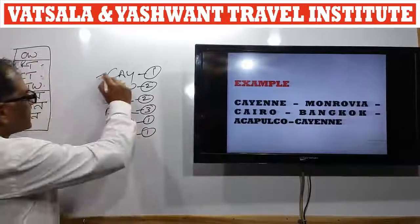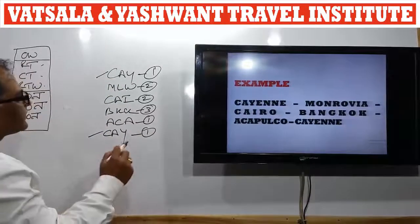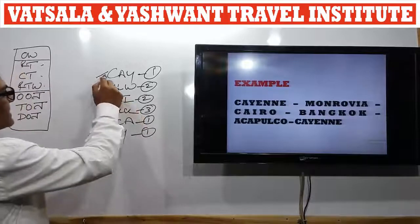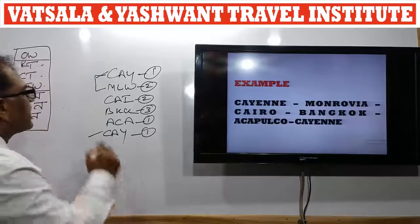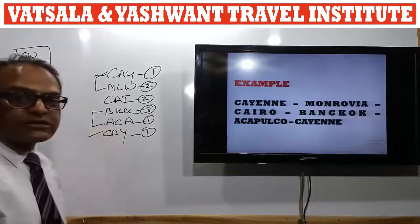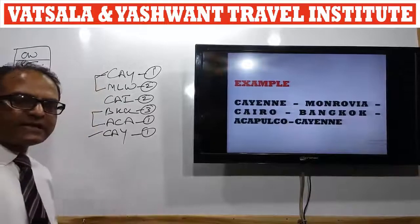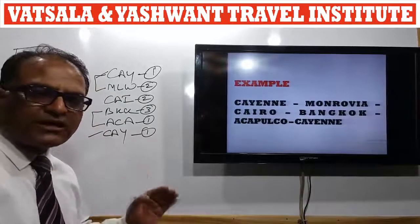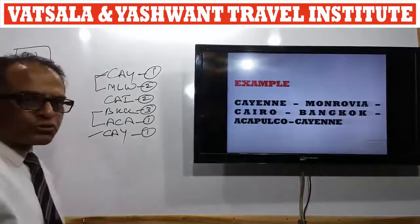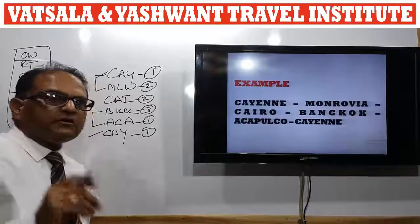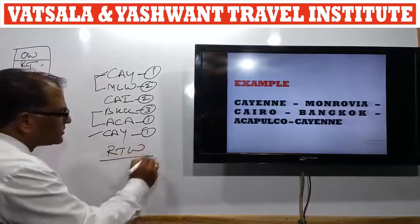The first and last cities are the same. The passenger is crossing the Atlantic Ocean on the outbound, and from Area 3 to Area 1, he is crossing the Pacific Ocean. That means in this itinerary the passenger has crossed both the Atlantic and the Pacific Ocean. So the answer for this journey is RTW — Round the World Journey.